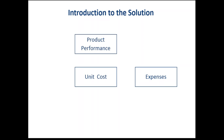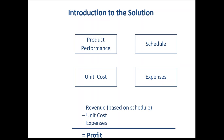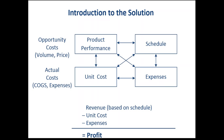Traditional terms for the variables we weigh in product development are scope, schedule, and cost. But for an economic analysis, we use economic variables: expenses, unit cost, and product performance — which we convert into sales volume and sales price. Schedule also impacts sales volume and sales price. These combine to give us revenue and cost from which we calculate profit. All of these decisions are trade-offs, and we're measuring incremental profit to figure out what the right thing to do is.